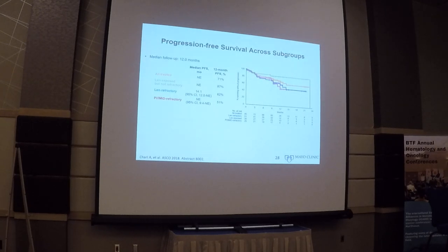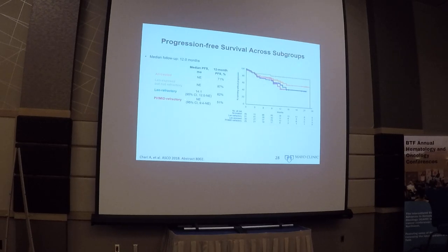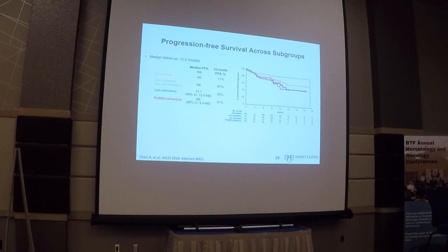Looking at progression-free survival from MMY-1001, the 12-month PFS was quite decent. Even in the dual-refractory patient population, nearly half of these patients remained progression-free at the end of one year. This is certainly an effective regimen, and it is currently being studied in Phase 3 trials as well.